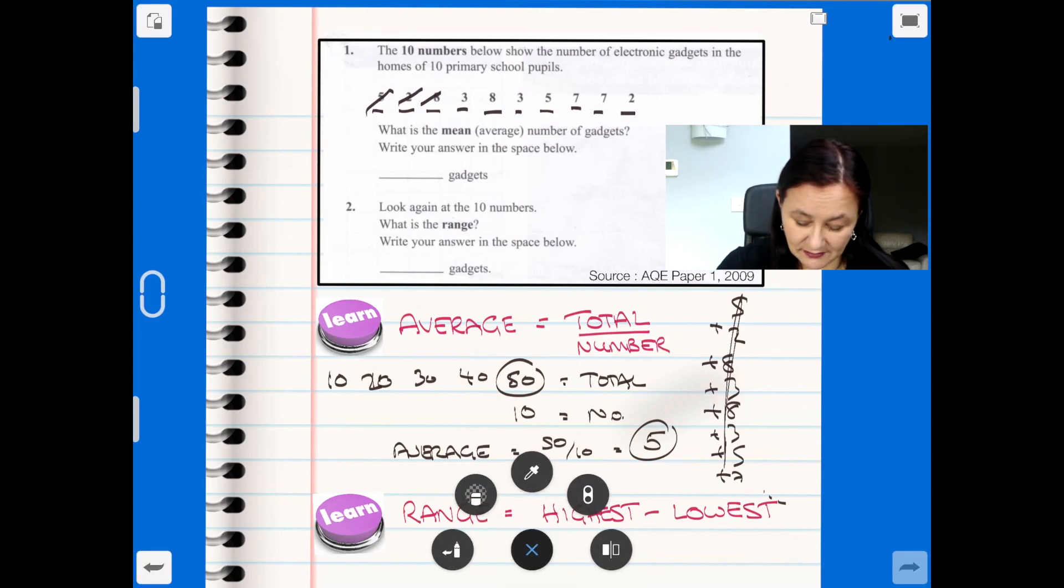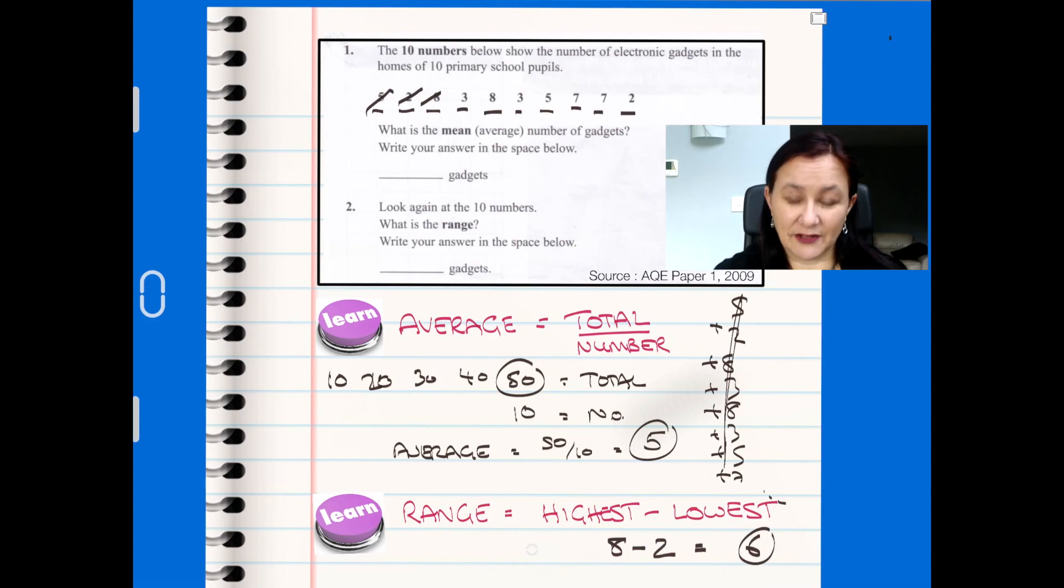And in this particular case the learning point is range is the highest minus the lowest. So in this case the range is simply, the highest number that we have there is the 8, and the lowest is the 2, so the range is 6. That's one mark, one really easy mark for an answer. As long as you know what range is, it's good.